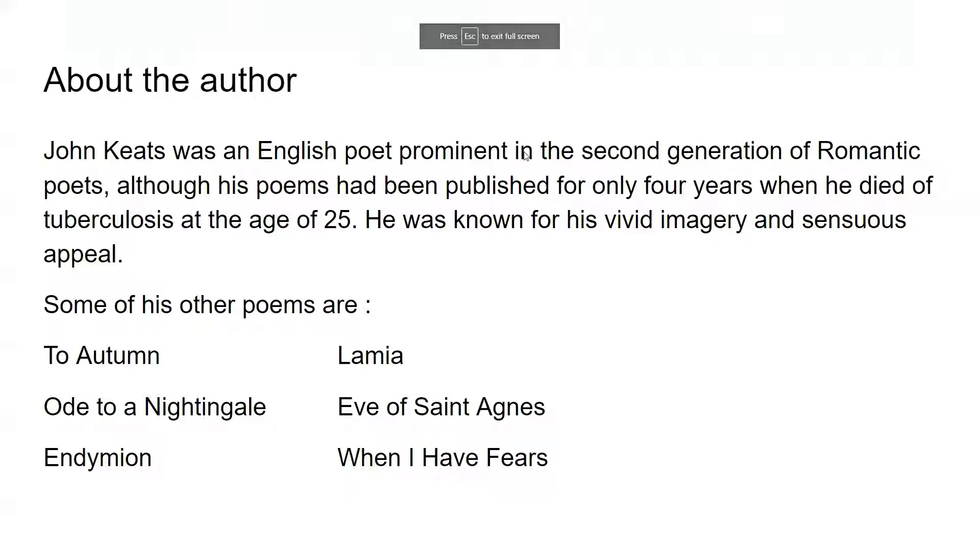About the author. John Keats was an English poet prominent in the second generation of romantic poets. Although his poems had been published for only four years before he died from tuberculosis at the age of 25. He was known for his vivid imagery and sensuous appeal.